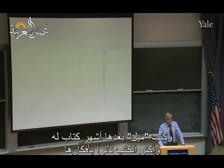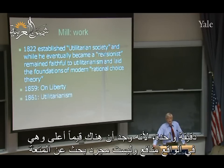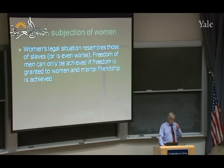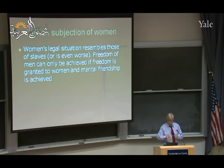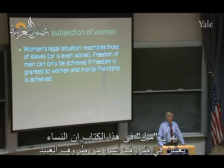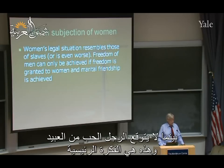Mill wrote his most important book after Harriet's death, but probably greatly influenced by her. He established a utilitarian society but eventually became a revisionist, because he said there are really higher values which are also utilities rather than just seeking pleasures. He wrote On Liberty, On Utilitarianism, and finally On the Subjection of Women. The most important work is probably his work on the subjection of women, which has inspired many feminists up to this day. He argued that women are actually worse in their conditions than slaves, because men expect women to love them rather than just obey — at least from slaves they don't expect love.